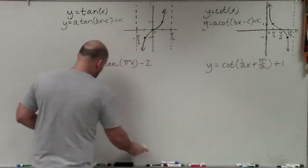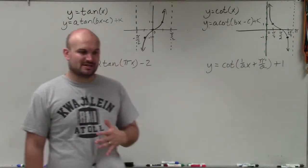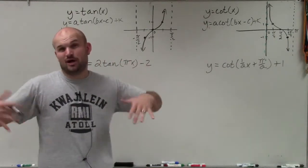So the one thing that remains kind of constant whenever we're doing tangent and cotangent, or really all of our graphs, is to identify all the information first.